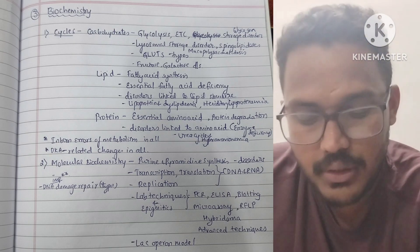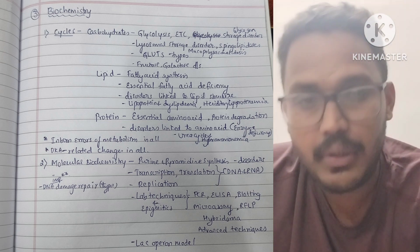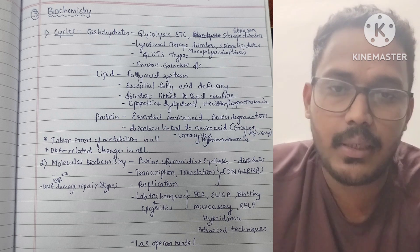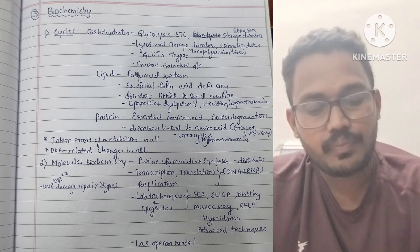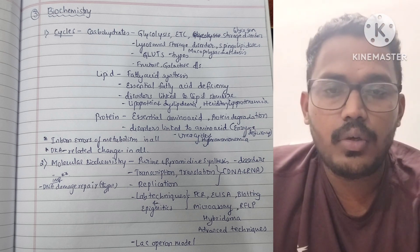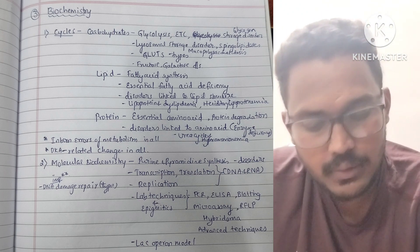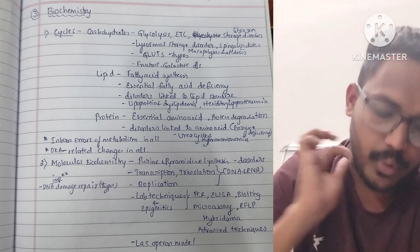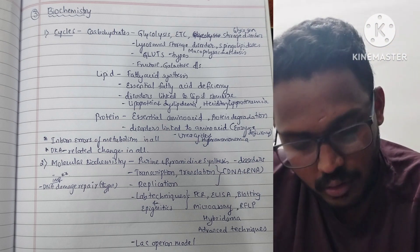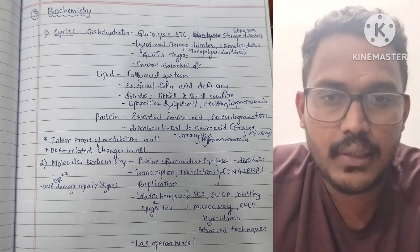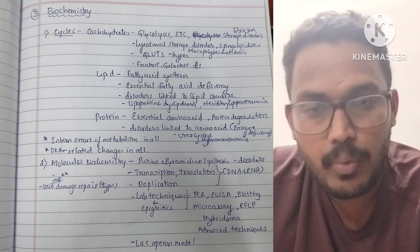The third section is biochemistry. Cycle-related questions are more important here — carbohydrate, lipid, and protein cycles. In carbohydrates: glycolysis, glycogen storage disorders, lysosomal storage disorders, sphingolipidosis, mucopolysaccharidosis, and fructose and galactose disorders are important. In lipids: fatty acid synthesis, essential fatty acid deficiency, disorders related to lipid structure and synthesis, lipoproteinemia, dyslipidemia, and hereditary lipoproteinemia are important.